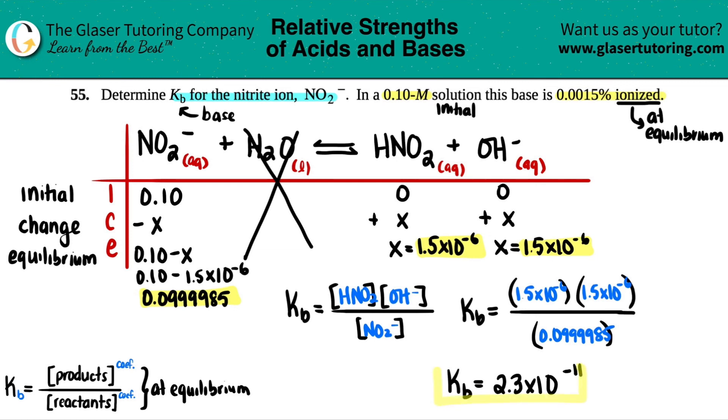It kind of makes sense. If your KB is very low as what this one is, you're not going to ionize a lot. This isn't even 1%, so it kind of checks out. But that's the answer here. I really hope this helped. Let me know in the comments, subscribe to the channel, and I hope to be seeing you all in later lessons. Thank you so much. I'll see you later. Bye-bye.